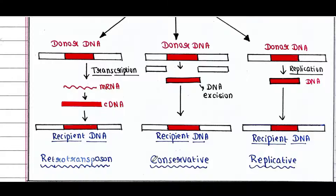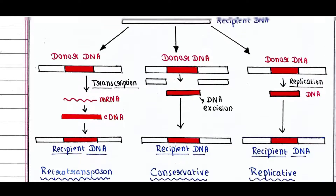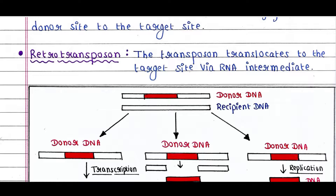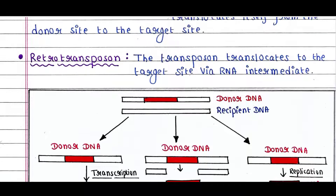In summary, replicative transposition is a copy-paste method and conservative transposition is a cut-paste method. These are the three types of transposons.